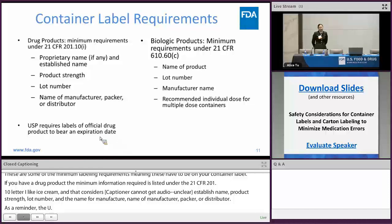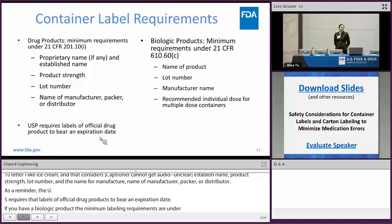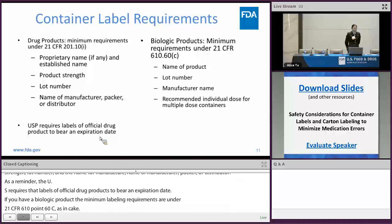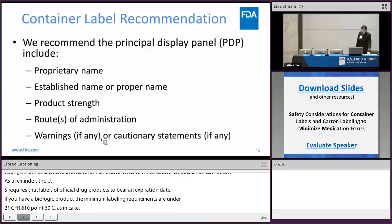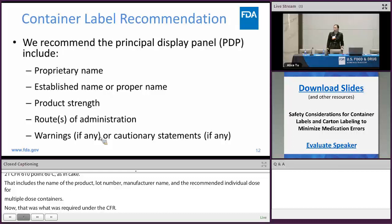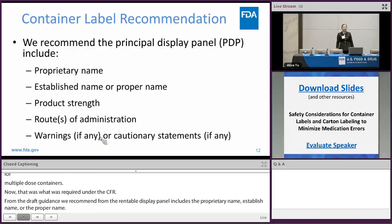If you have a biologic product, the minimum labeling requirements are under 21 CFR 610.60(c): the name of the product, lot number, manufacturer name, and the recommended individual dose for multiple dose containers. From the draft guidance, we recommend that the principal display panel include the proprietary name, the established name or proper name, the product strength, and routes of administration, as well as warnings and precautionary statements if applicable.